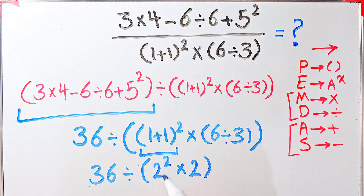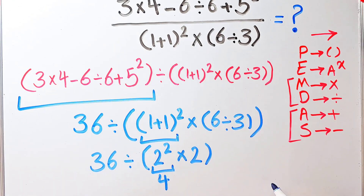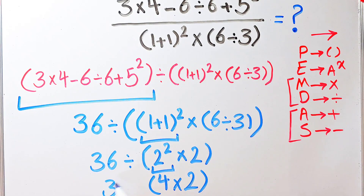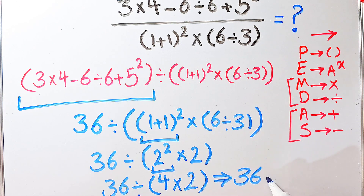We simplify the parentheses: two to the power of two equals four. Four times two equals four — now we have 36 divided by four, then times two. We simplify: four times two equals eight. Now we have 36 divided by eight, so the final answer is 36 over 8.